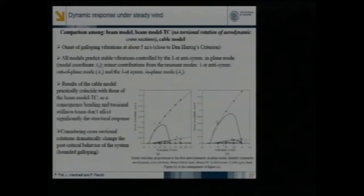Here you see a comparison between the beam model, the beam model in which the torsional rotation is neglected in the evaluation of aerodynamic forces, and the cable model which neglects torsion both in the mechanical as well as in the aerodynamic part of the formulation. You can see that all models predict the same onset, the same velocity for the onset of galloping vibration, which is close to the one predicted by the Den Hartog criterion. All models give steady state vibration which are mainly controlled by the first anti-symmetric in-plane mode.